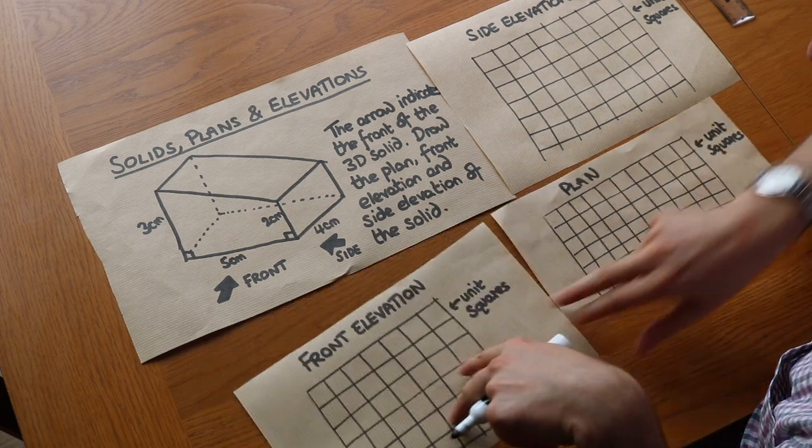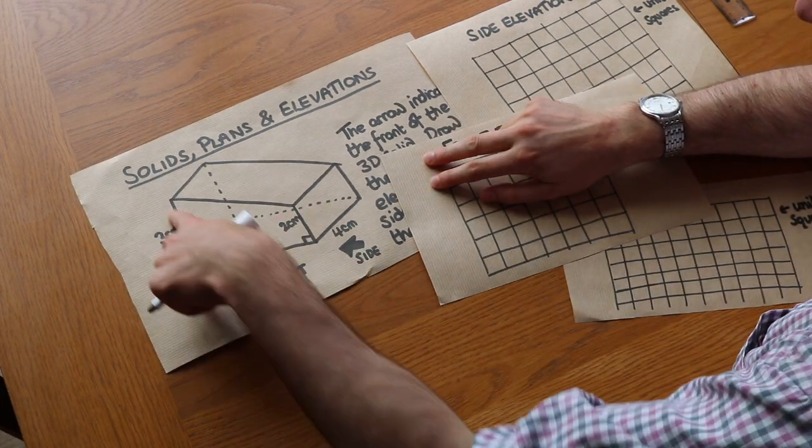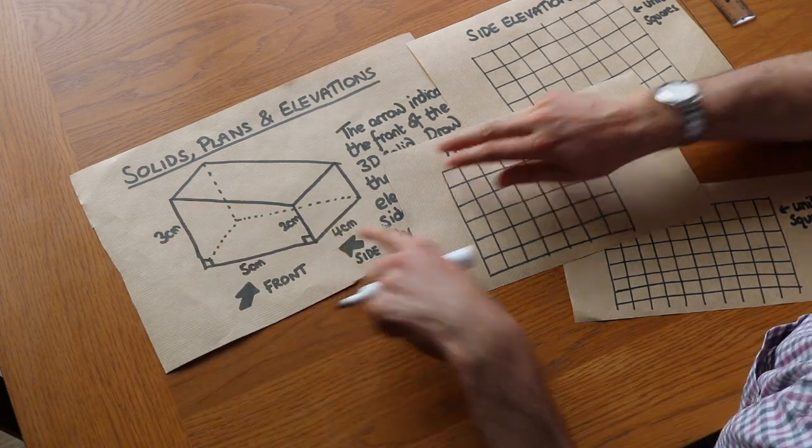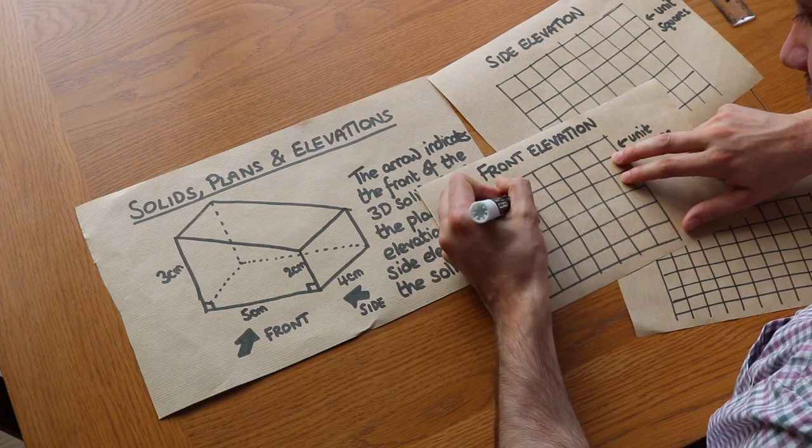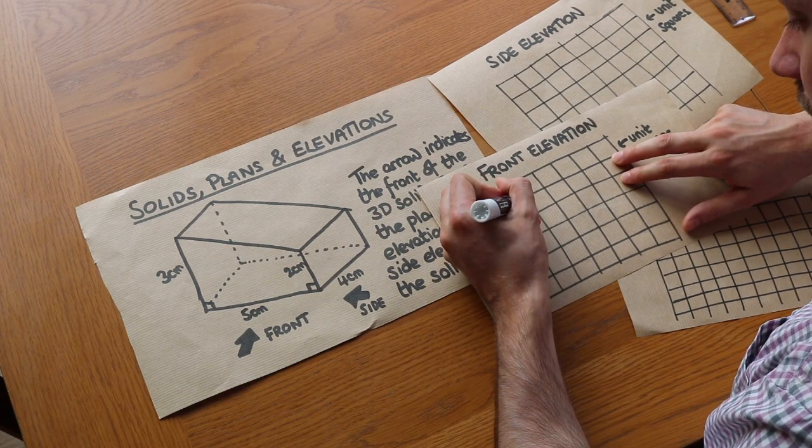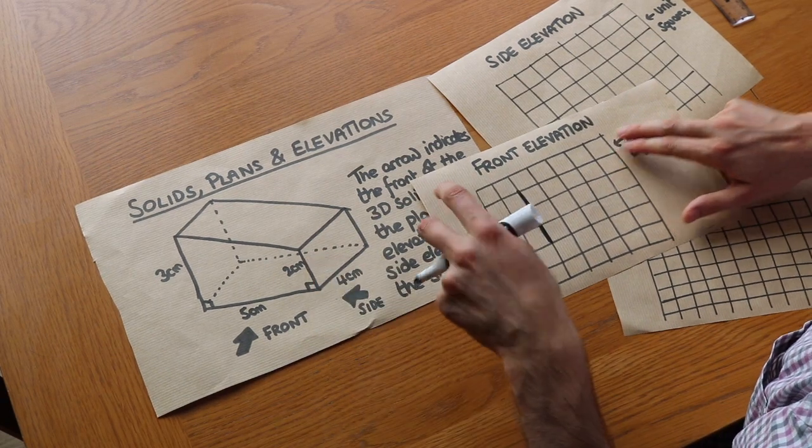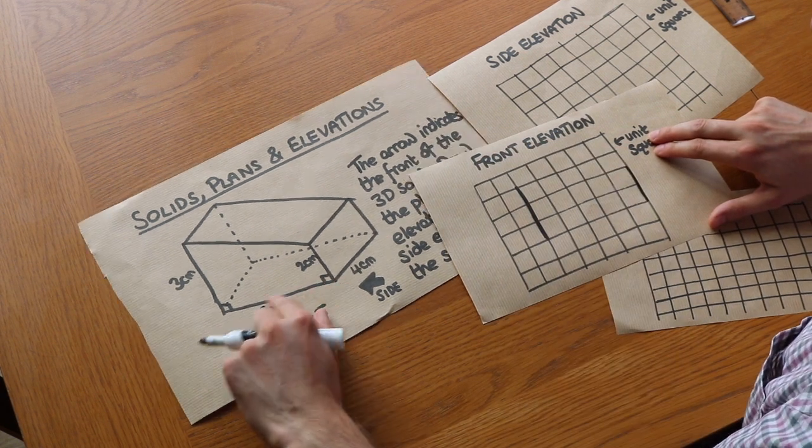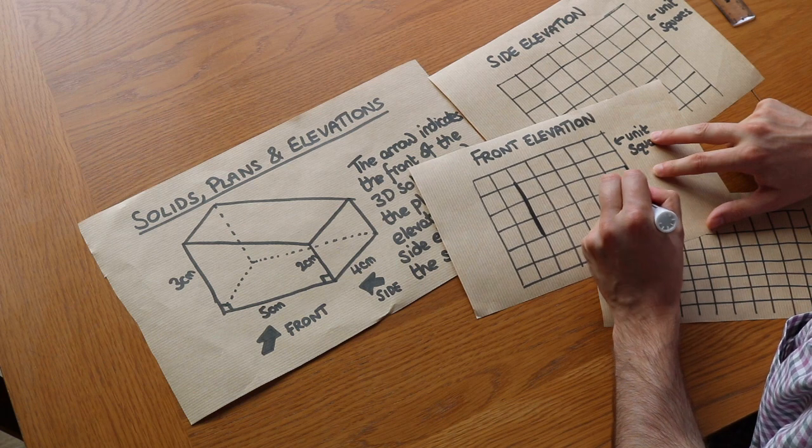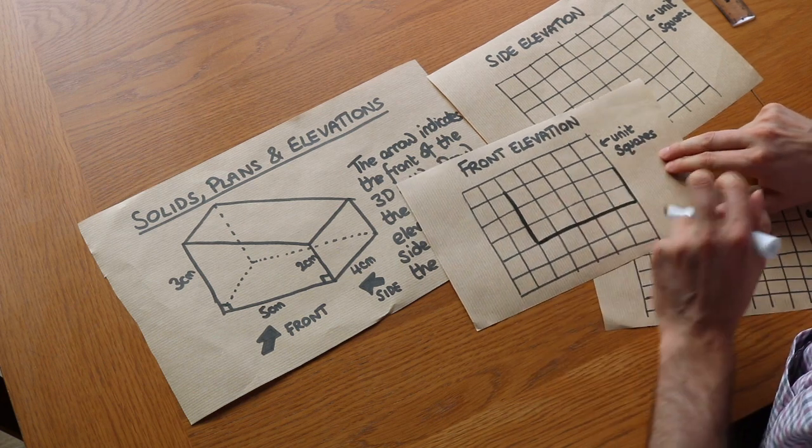So if we draw the front elevation what will we see? Can you see that we see this kind of trapezium shape? So let's kind of copy what we see. We can see on the left that we've got three units up, on the right of the shape it only goes two up and we can see it's five across like this and these are unit squares by the way.